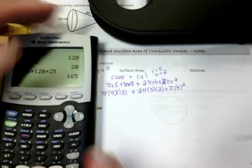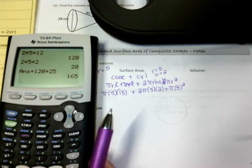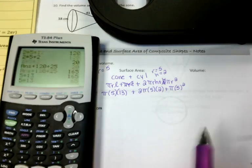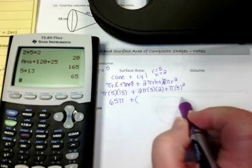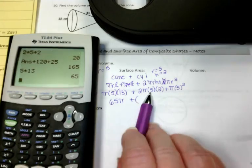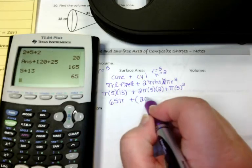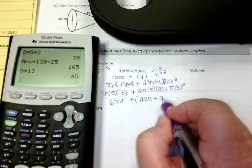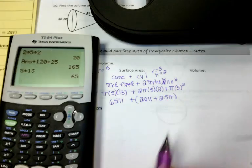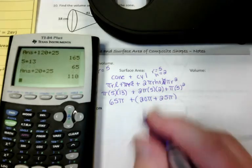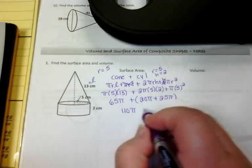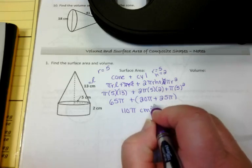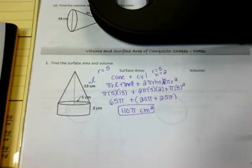Now I just plug these into my calculator. We're not going to plug pi into the calculator because we're going to leave our answers exact. So this is 65 pi for my cone. And for my cylinder, 2 times 5 times 2 is 20 pi, and pi times 5 squared is 25 pi. So we put all that together, and we get 110 pi square centimeters for the surface area of this shape. When you think surface area, just remember I'm going to paint the outside of my shape.